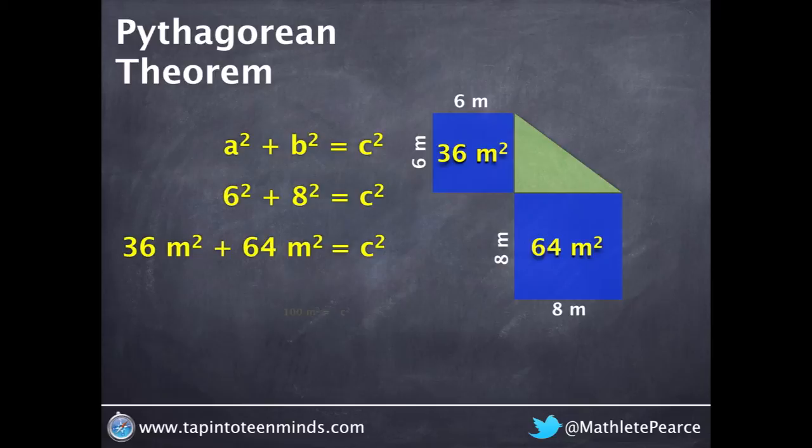Since a squared plus b squared is equal to c squared, we add these two areas together to get a sum of 100m squared for the area of c squared.